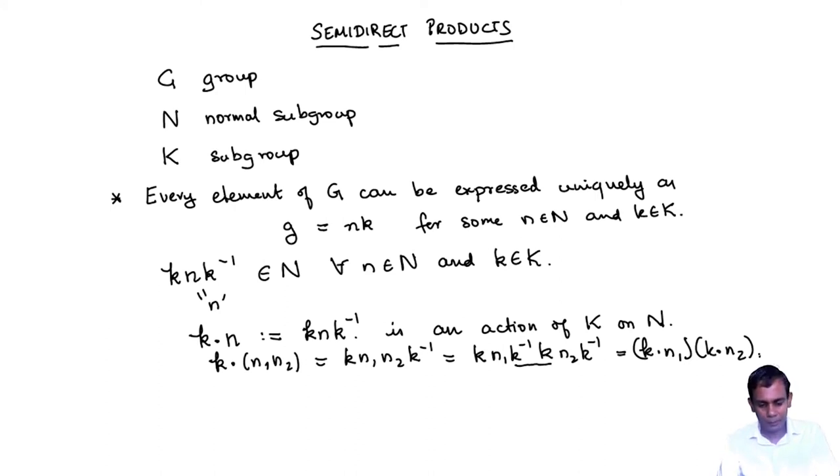Okay, so these are the features that we get when we have a group and a normal subgroup and this kind of unique factorization of elements.